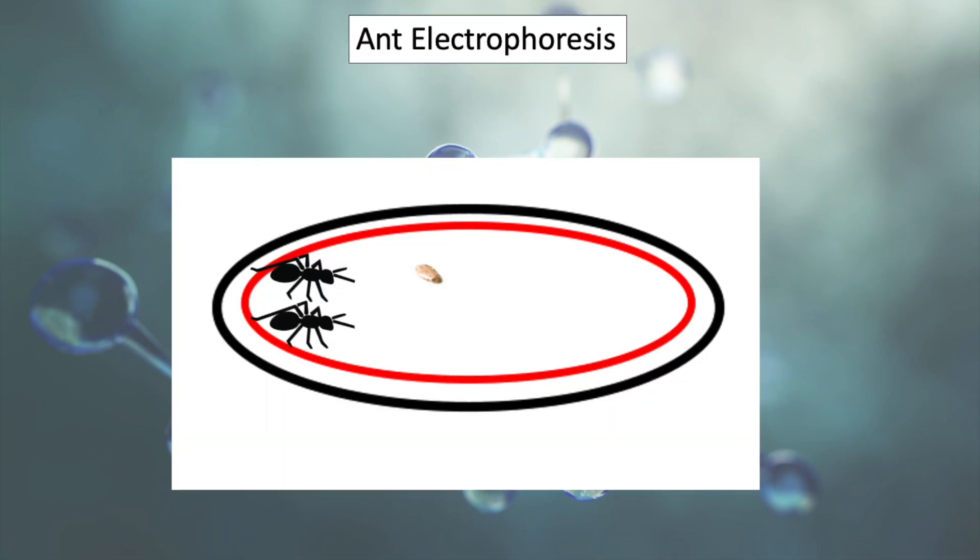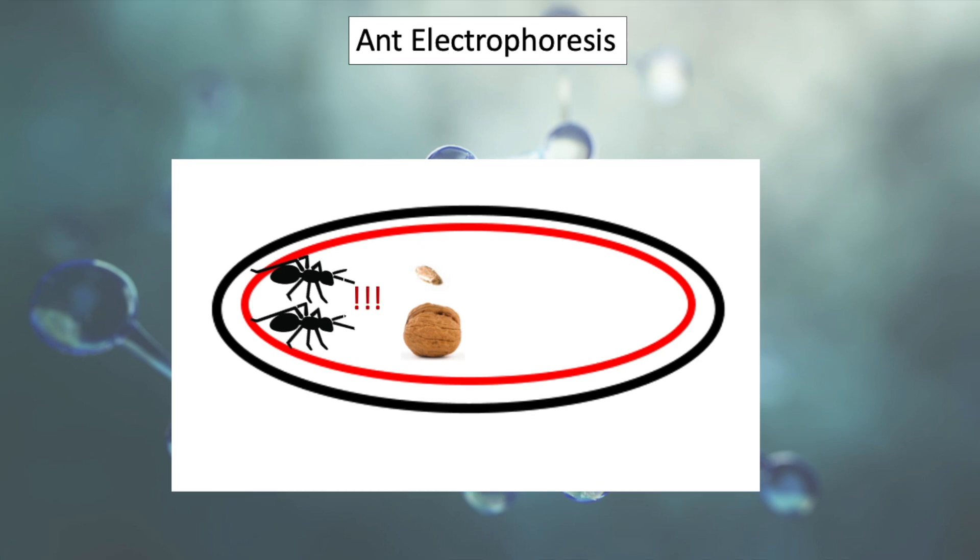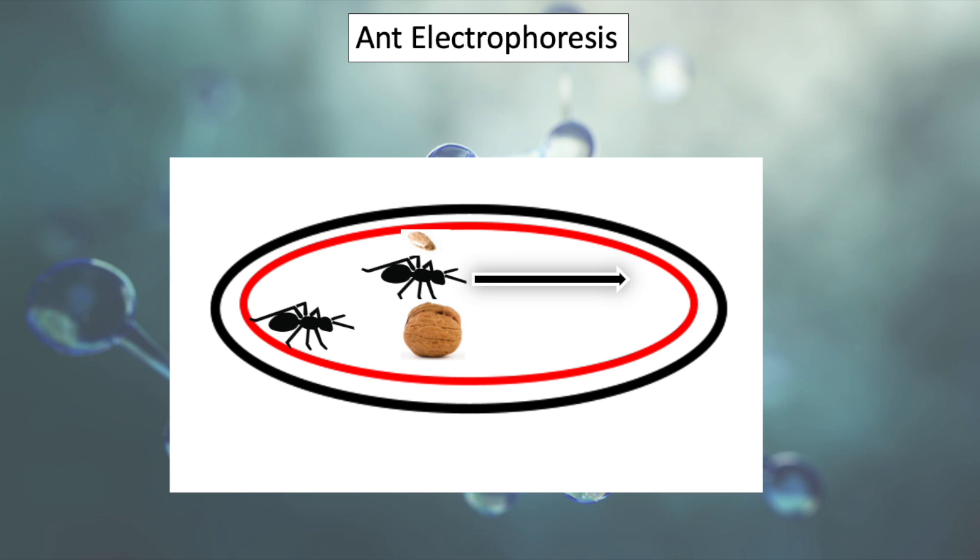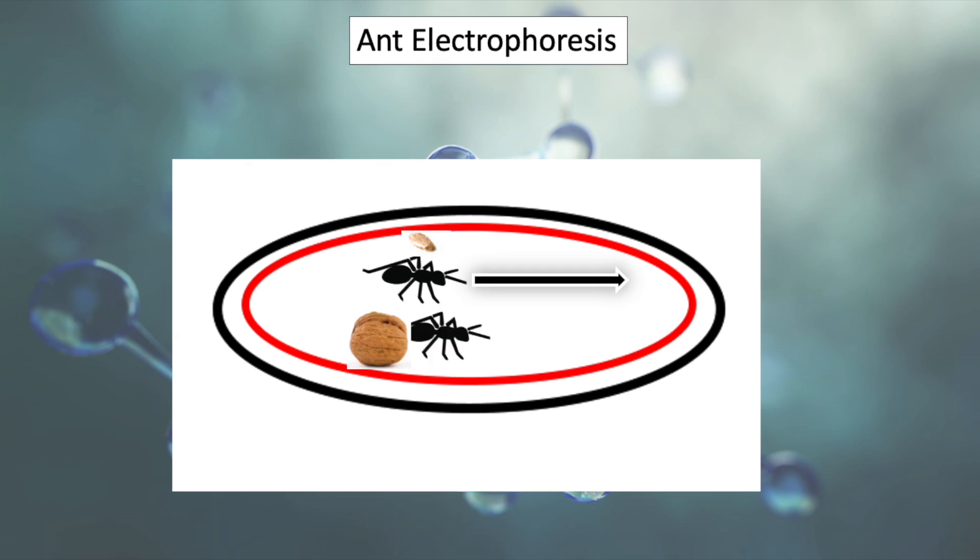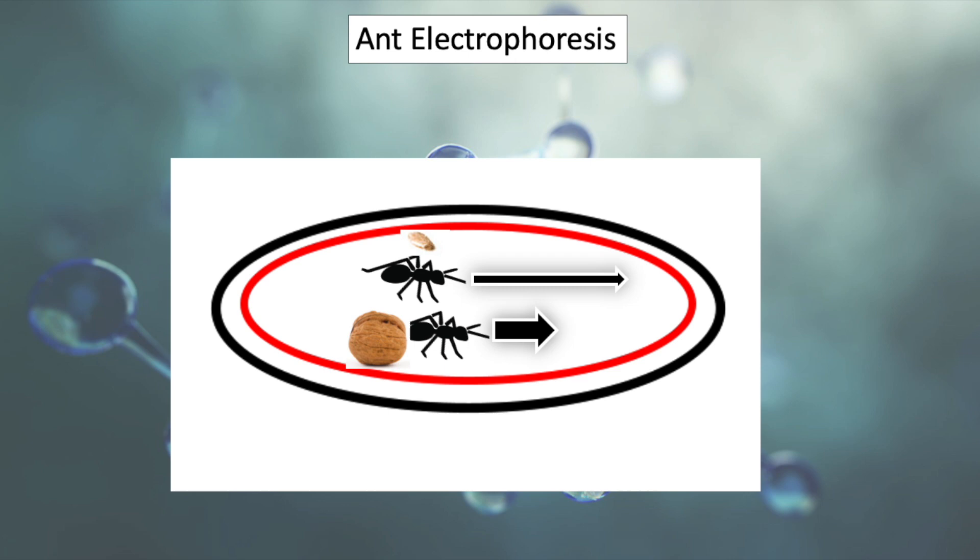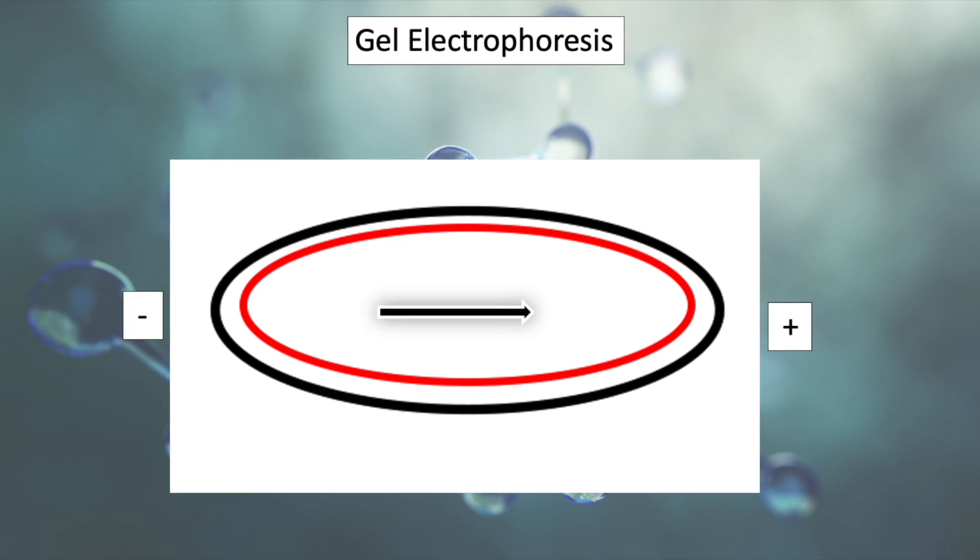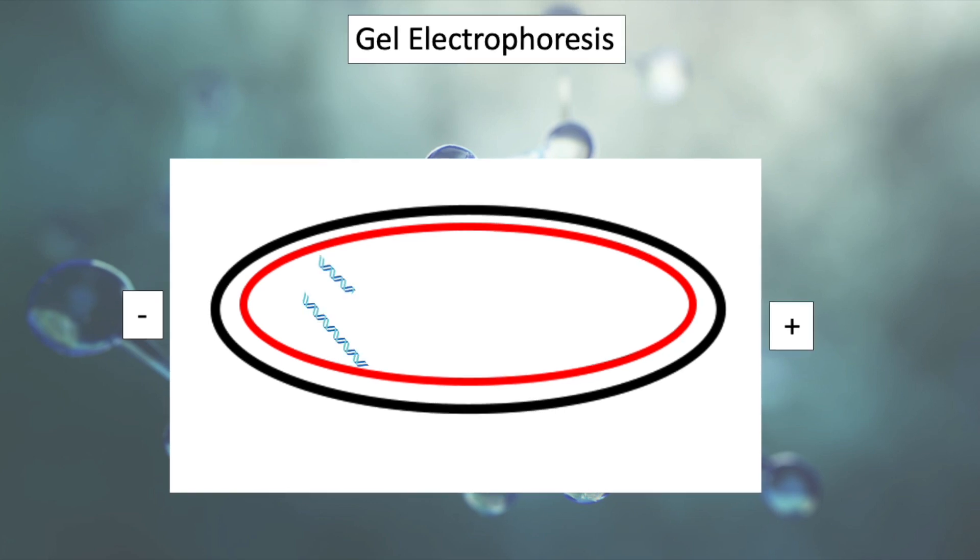you could imagine they find a piece of food, pick it up, and carry it down a plate. An ant carrying a breadcrumb will pick it up and move quite quickly, while an ant carrying an entire walnut will pick it up, carry it, but move much slower as it drags the walnut behind him. This is similar to the charged particles traveling across the gel and picking up fragments of DNA as they travel.